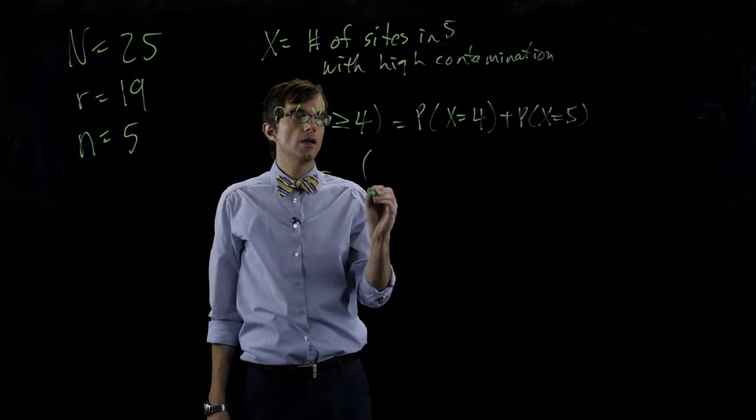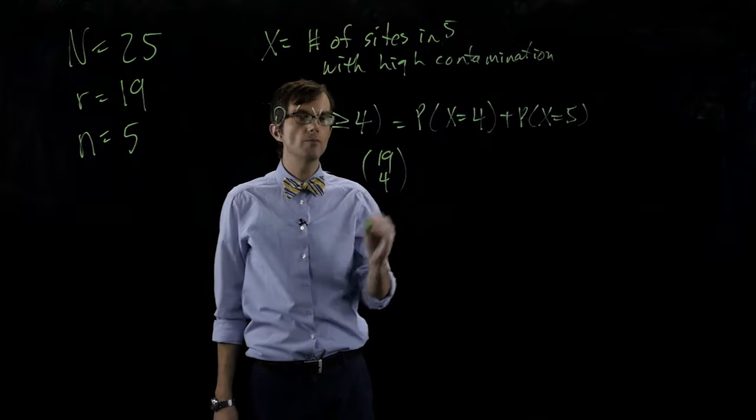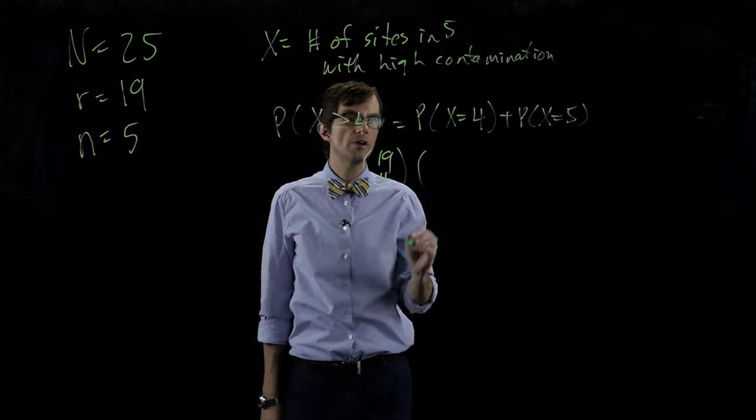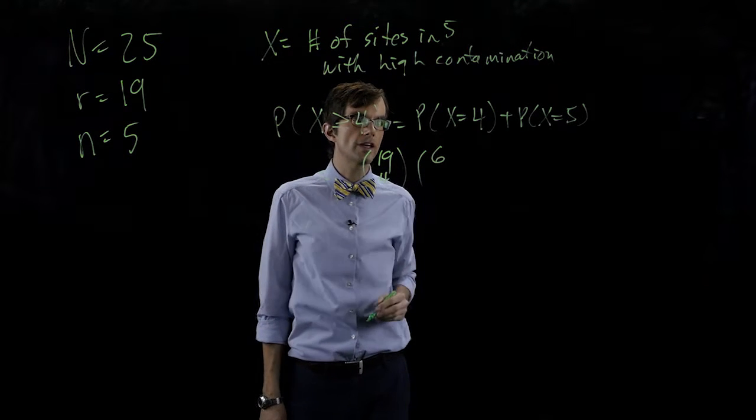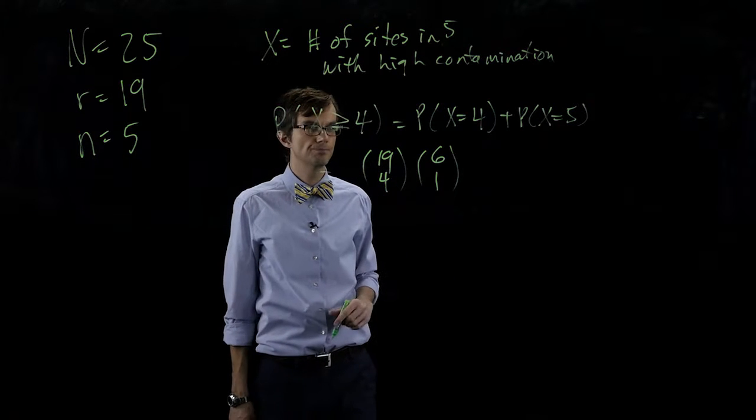So this is going to be, of those nineteen sites, we're going to pick four of them. So four of them are going to have high contamination. That must mean the rest, the other six, we're going to pick one. One has low contamination.